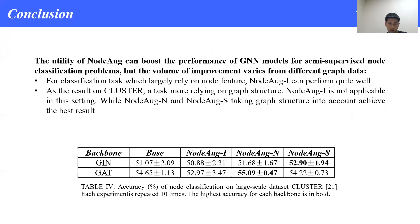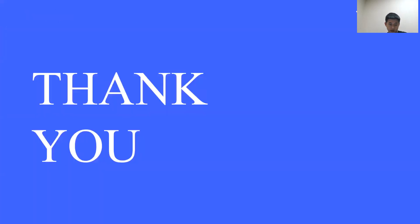So we come to the conclusion. The utility of NodeAug can boost performance of GNN models for node classification tasks, but the volume of improvement varies from different graph data. For classification tasks which largely rely on node features, NodeAug can perform quite well. As a result on CLUSTER, a task more relying on graph structure, NodeAug-I is not applicable in this setting, while NodeAug-N and NodeAug-S, taking graph structure into account, achieve the best results. Now this is all of our work. Comments are welcome below the video. Thank you.